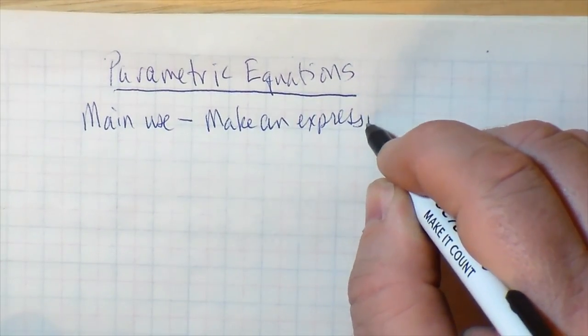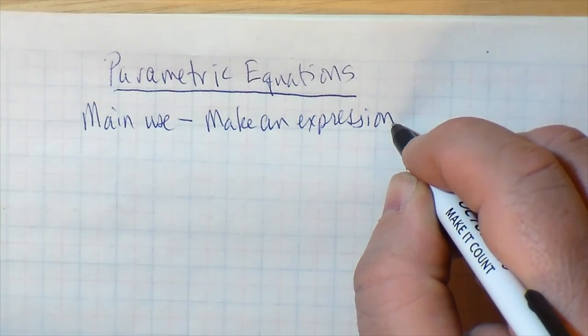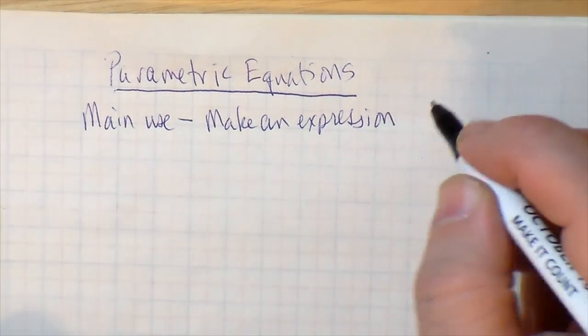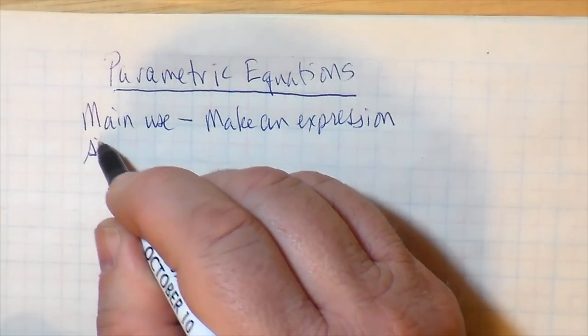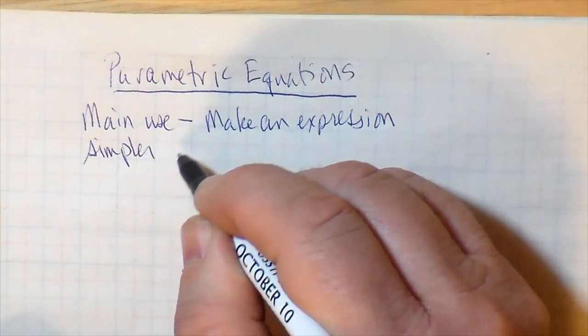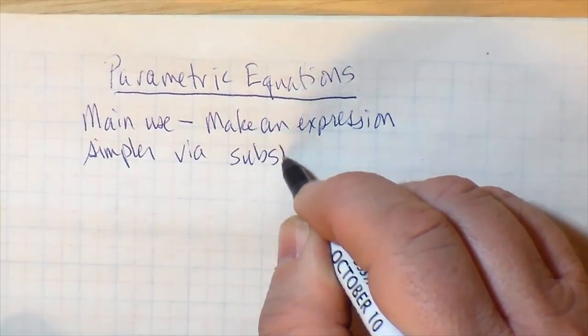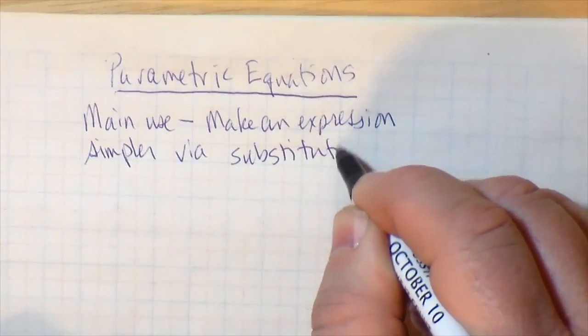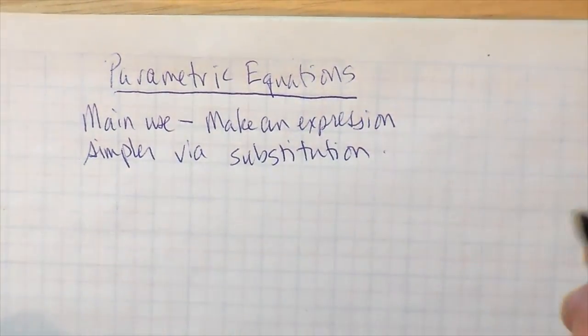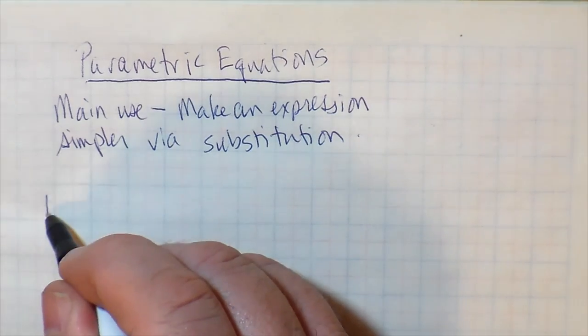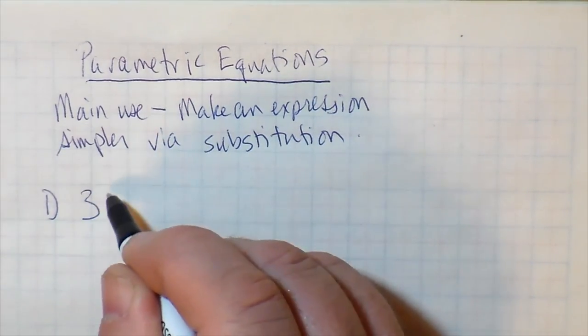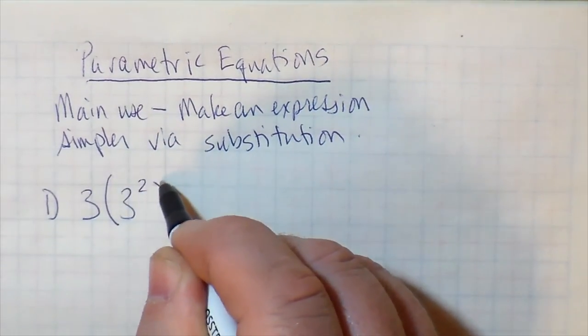If there's a simpler way to factor a polynomial or to factor a rather complicated expression, I would suggest you use it. But parametric equations sometimes do a lot of work in making very complicated expressions into something simpler. So the main use is to make an expression simpler by way of substitution.